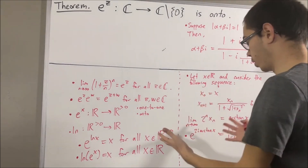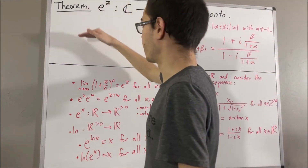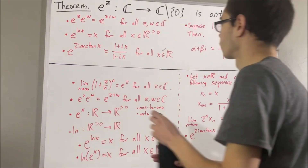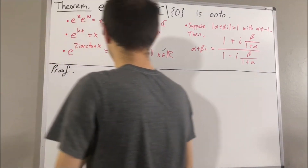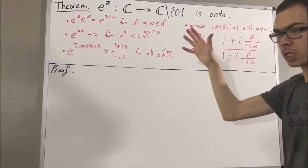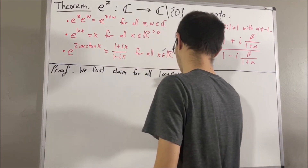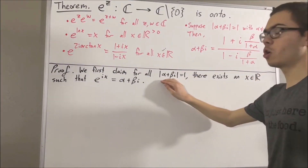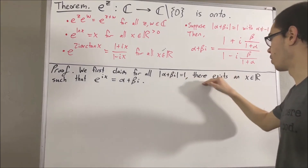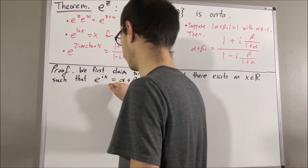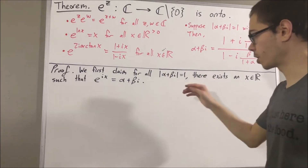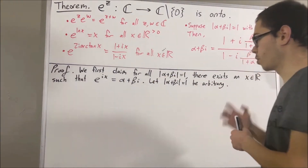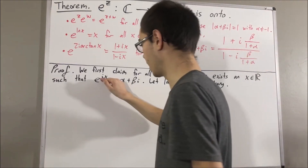We are going to use this fact again in proving this theorem. Now let's get into proving it. We are first going to prove the following claim: for all complex numbers alpha + beta·i with magnitude 1, there exists a real number x such that e^{ix} equals alpha + beta·i. To prove that, let's give ourselves an arbitrary complex number alpha + beta·i with magnitude 1. The goal is to find a real number x such that e^{ix} equals alpha + beta·i.